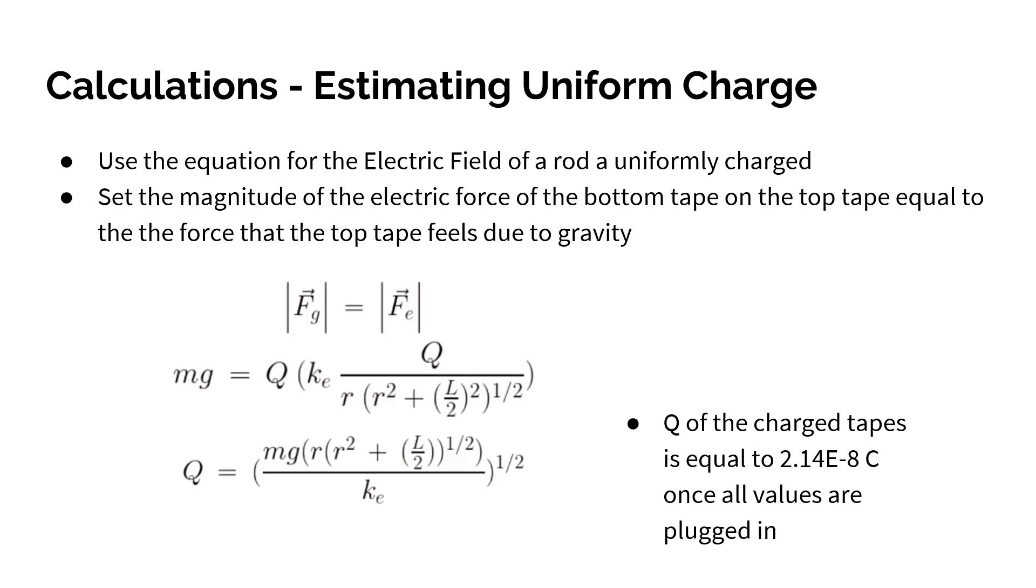Here we're going to be estimating the uniform charge of the tapes. So our process is we're going to set the gravitational force that the top tape feels equal to the electric force that the bottom tape exerts on that top tape. As you see, the estimated charge of the tapes is equal to 2.14 times 10 to the negative 8 coulombs.